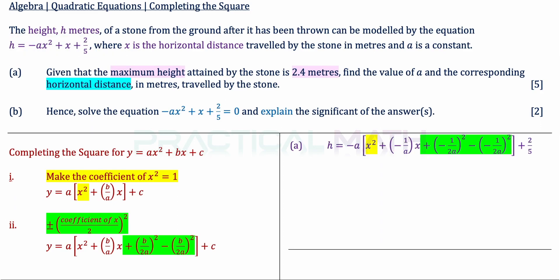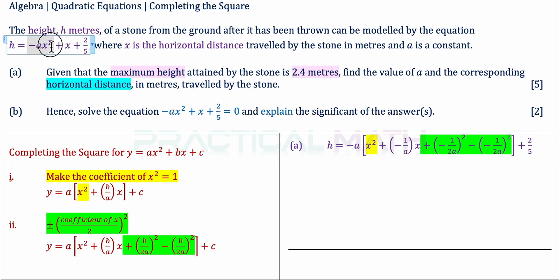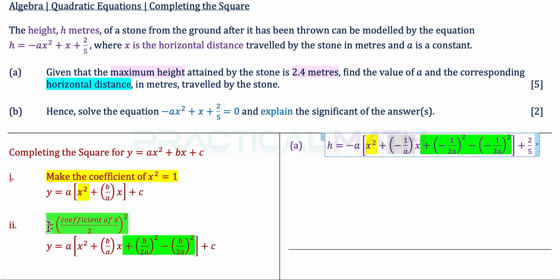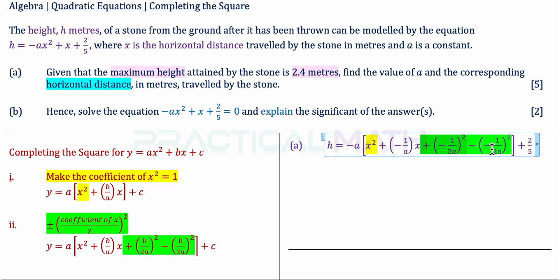In Step 1, we factor out negative a. Within the bracket we have x squared, and dividing x by negative a gives negative 1 over a times x — so the coefficient of x is negative 1 over a. In Step 2, we take the coefficient of x over 2, which is negative 1 over 2a, and introduce plus and minus (negative 1 over 2a) squared inside the bracket, leaving the 2 over 5 on the outside.